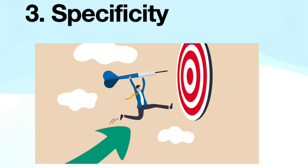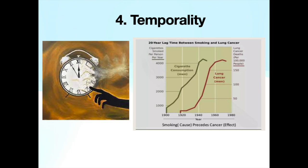Specificity, as explained by exposure, is associated with a specific outcome and the outcome is not linked to multiple exposures. Temporality, as explained by the cause, must precede the effect in time.